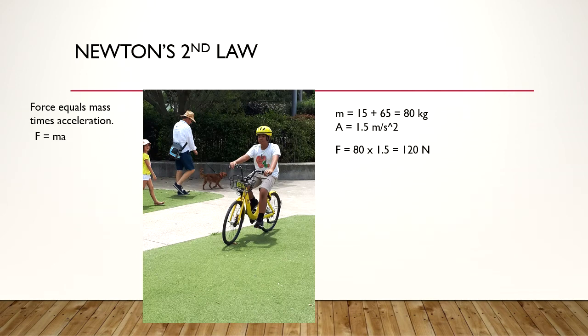Now onto Newton's Second Law. Newton's Second Law states that force is equal to mass times acceleration. It can also be written as an equation: F equals MA. M stands for mass, and A stands for acceleration. In this picture, the mass of the bike is 15 kilograms, and my mass is 65 kilograms. When combined, the total mass is 80 kilograms. The bike is also accelerating at a speed of 1.5 meter per second squared. Therefore, when the mass and the acceleration of the bike are multiplied, it results in 120 newtons of force being exerted on the bike.